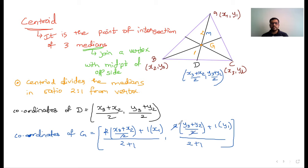If you rearrange the numerator, you will find that it is X1 plus X2 plus X3 divided by 3, and Y1 plus Y2 plus Y3 divided by 3. So this is the formula for finding the centroid of a triangle when three vertices are given.